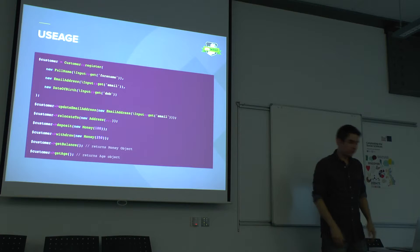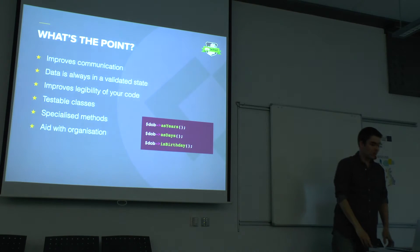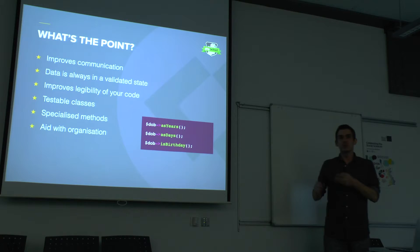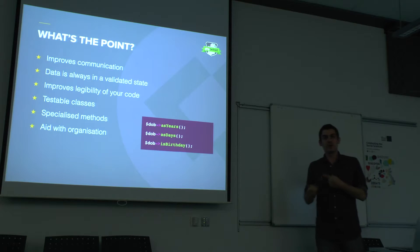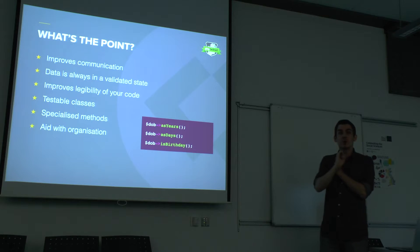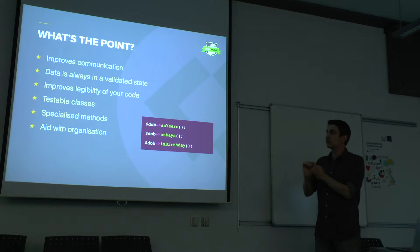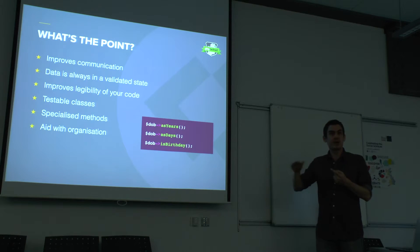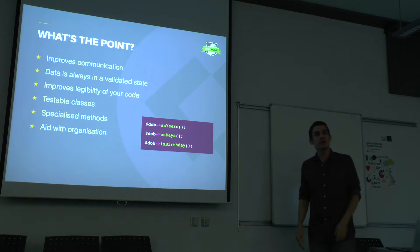So that all sounds kind of good and interesting, but what's the point? Well, first of all, by using real English for method names and class names instead of just having strings passed in, you're actually improving communication because everybody starts to understand what's going on in your application. Your data that you're passing around is always in a valid state — there's no way you can pass an email address into the core of your application that isn't completely valid. Even if somebody gets past the front-end validators on your website, once that email address passes through and gets to your classes, exceptions will fire so they're never going to be persisted.